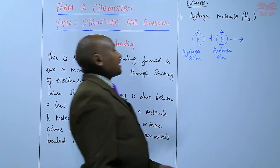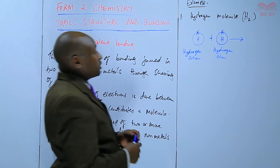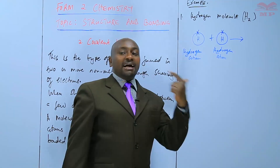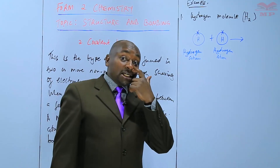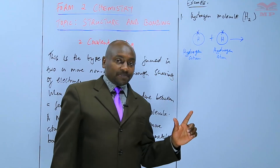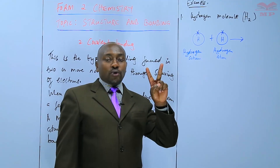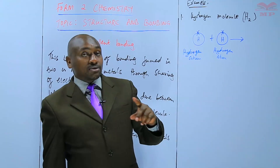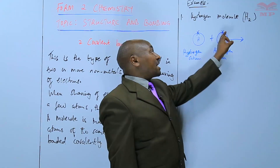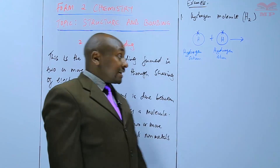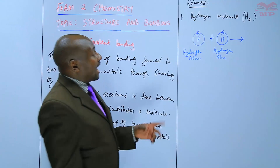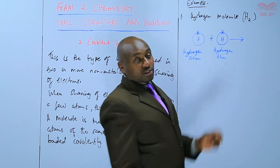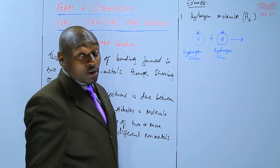A hydrogen atom has one electron, so it is not stable. It needs another electron so that it can attain a duplet — an electron arrangement of two, which is stable. The other hydrogen atom is the same: it has only one electron, so it also needs another electron. The two atoms will come together and share their electrons so that they attain a stable duplet.